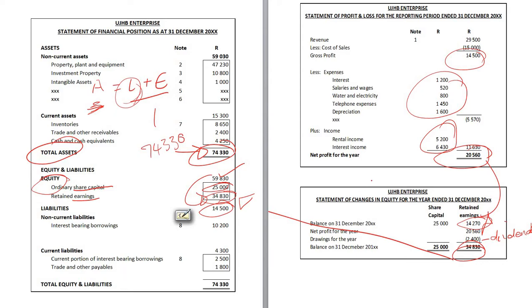This amount looks familiar — it's the same retained earnings figure in our statement of financial position. When added to our share capital amount, it gave us $59,830, and added to our liabilities, gave us $74,330, the same as your assets. This illustrates the interconnectedness of financial statements and how the accounting equation links the components of the financial statements together.